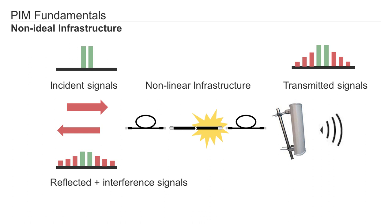Connectivity issues could be a loose connector, a bad connection to the cable, dirt or metal parts in the connectors, or even cracked solderings on jumpers or antennas. If there is a connectivity issue and RF signals are input on the coax cables, new signals will be created by this non-linear infrastructure. This is called PIM — Passive Intermodulation. Additional signals are not good for the system, as they create interference and additional noise.